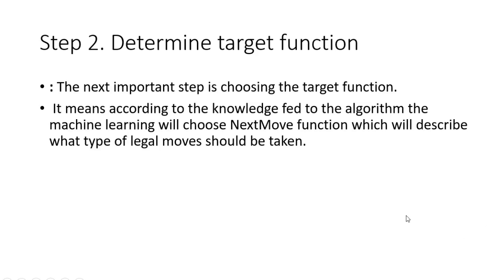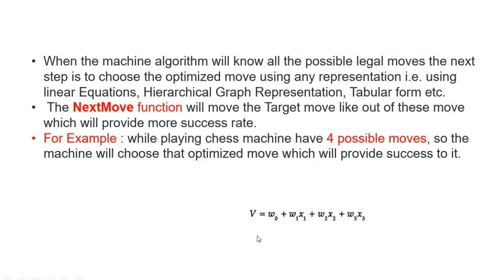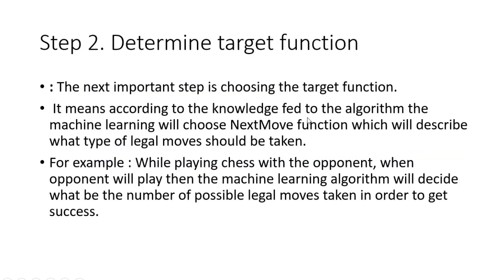Step 2 is to determine the target function. Target function means you specify the knowledge to the algorithm describing what the legal moves are. In the case of chess, we write a function called the next move function, which describes the legal moves that can be taken. You decide the number of possible legal moves that can be taken in order to get success — that is the target function.